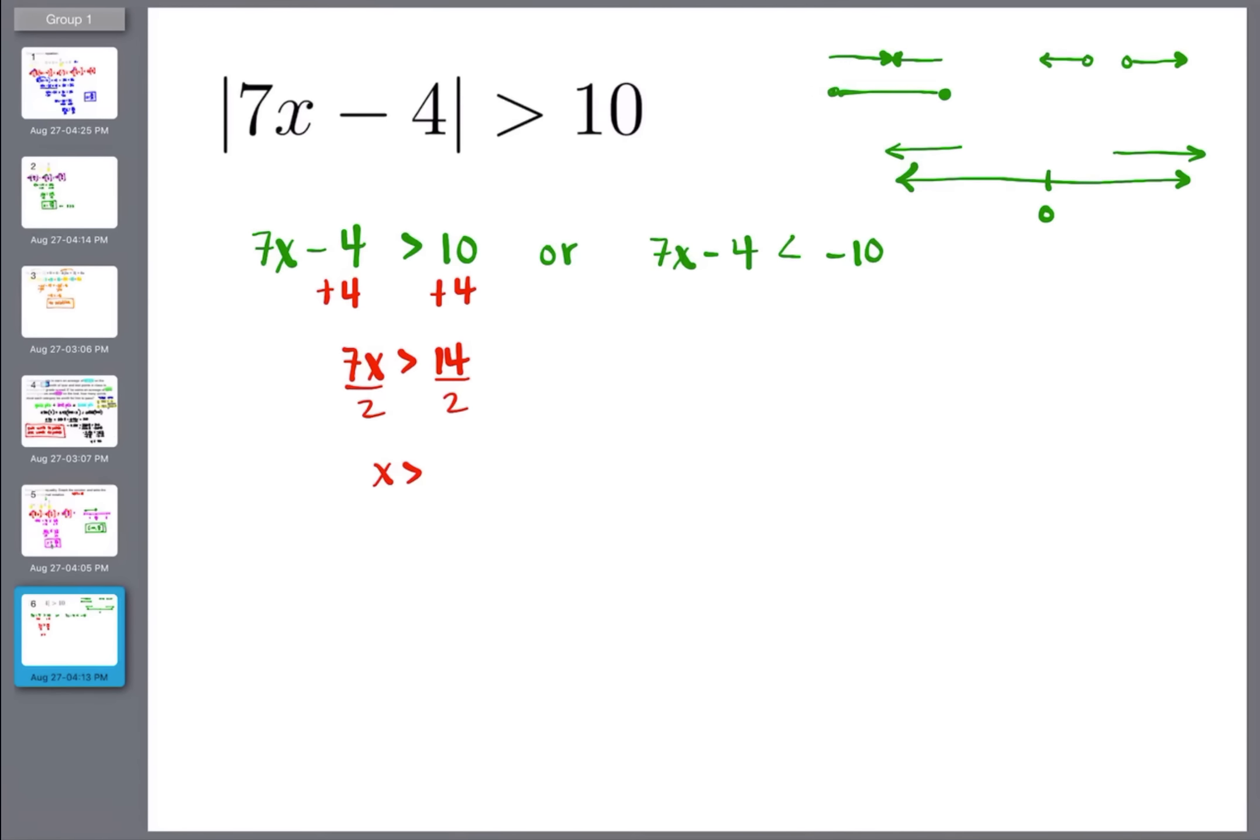And if we divide by 7, x is greater than 2. Make sure. Yeah, x is greater than 2. That seems like I'm making a mistake because I'm doing this quickly and I looked at it like I was crazy. So 14 divided by 2 is 7, or I have the word or. Remember, when we solve this side, I have 7x is less than negative 6. And then if we divide by 7, x is less than negative 6 over 7. So that's our answer.